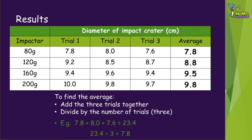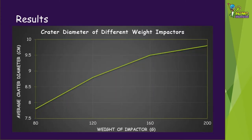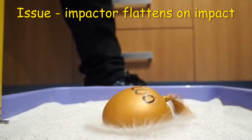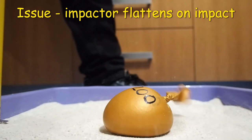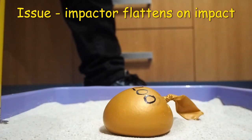These are the results we got from our trials. Find the average diameter of each impactor's crater by adding the three trial measurements together, then dividing by the number of trials. You might also like to graph your results. Our graph clearly shows that the crater diameter increases as the impactor weight increases, as you would expect. Note that the balloon impactors flatten on impact, so make sure to reshape them into spheres before doing another trial.